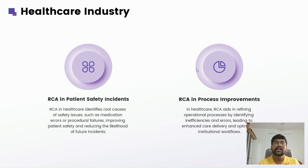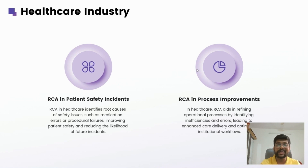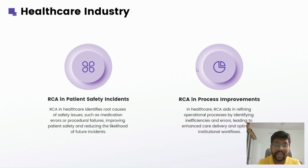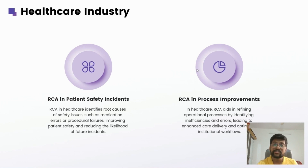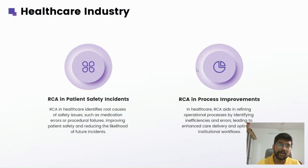For healthcare, consider an RCA in a patient safety incident — for example, a software issue where medication names for diseases are not aligned properly, which is directly related to patient safety. In that case, you need to connect with the IT team to find out why the allocation is not proper for medicines by disease. You need to document whether it is a procedural failure or another type of failure and its impact, improving patient safety and reducing the likelihood of future incidents.